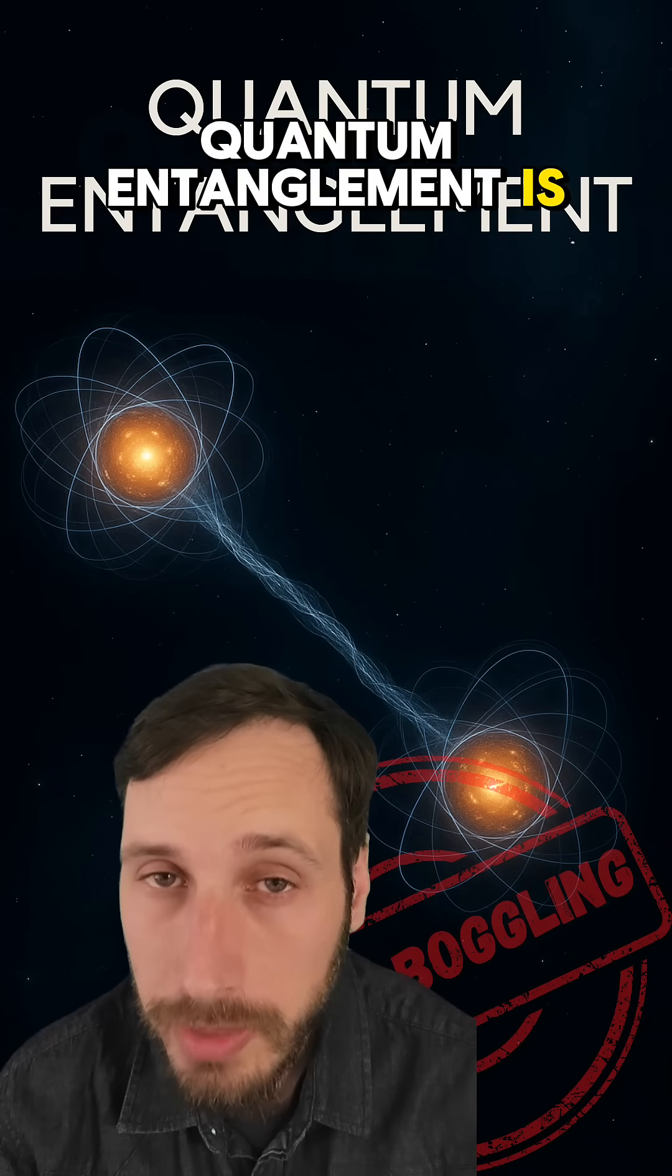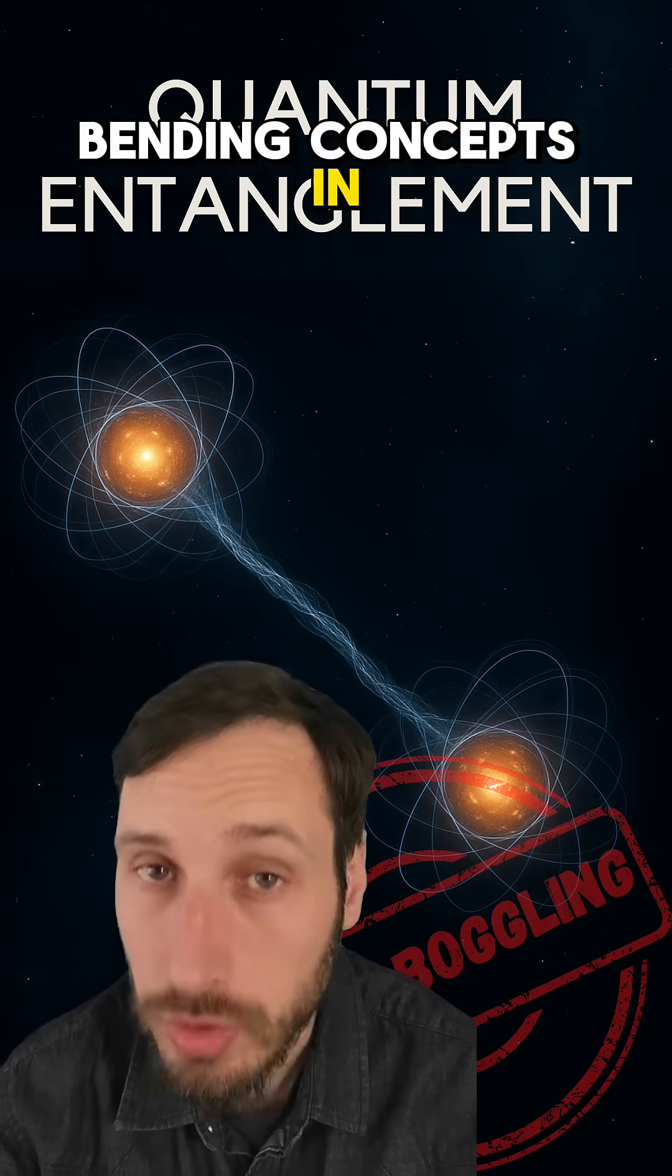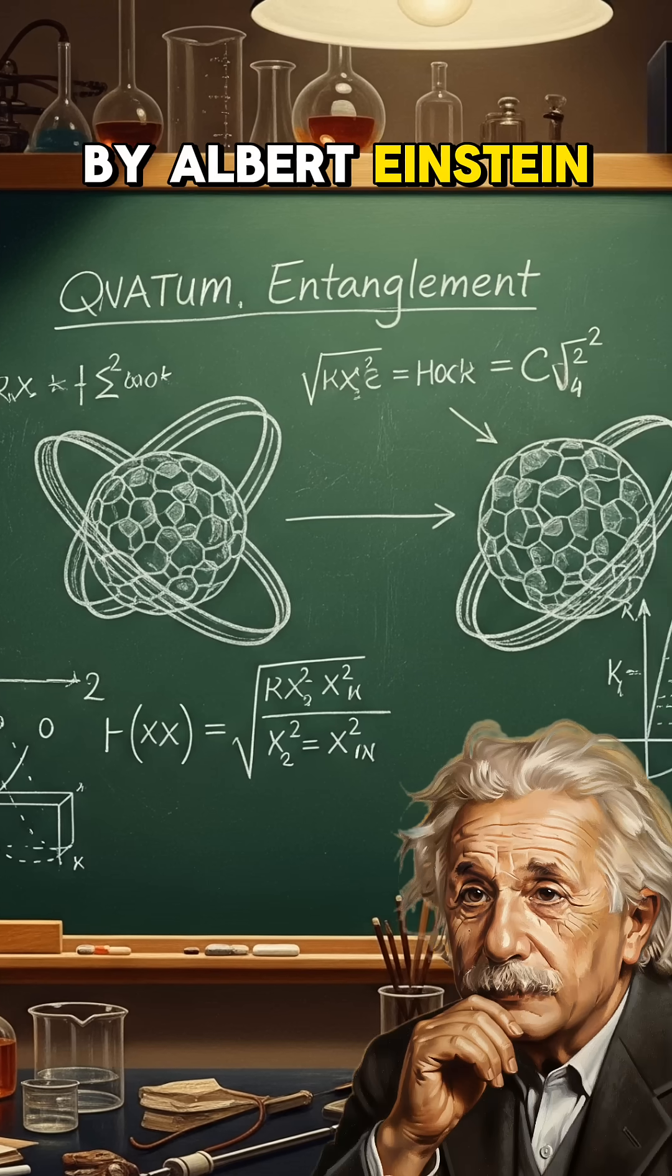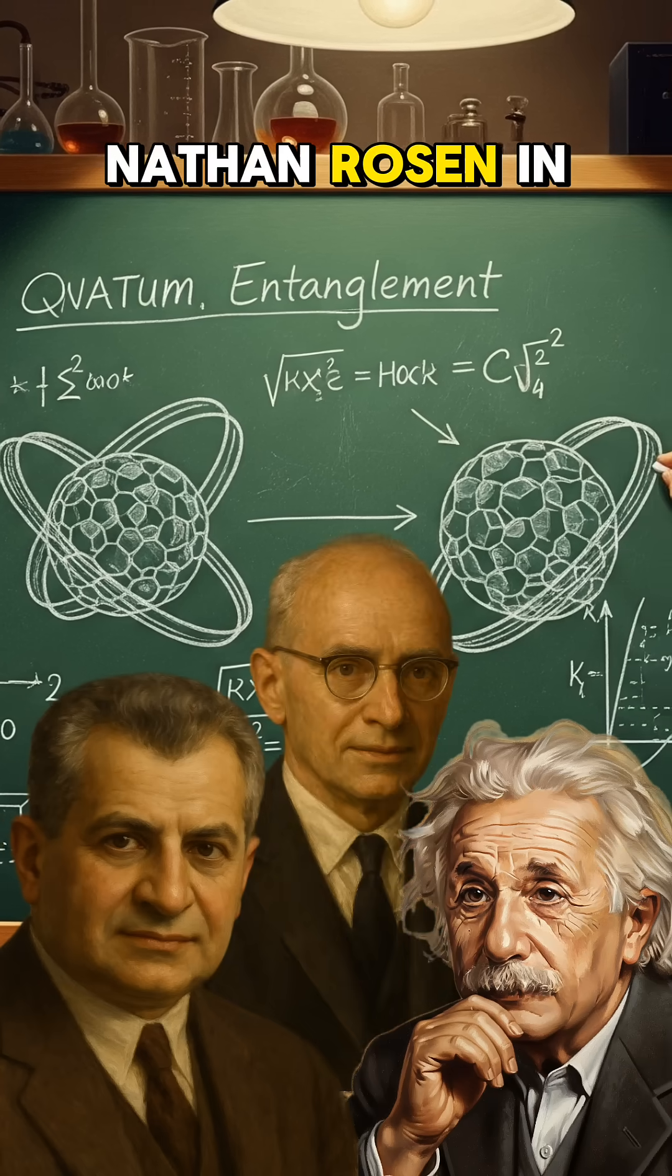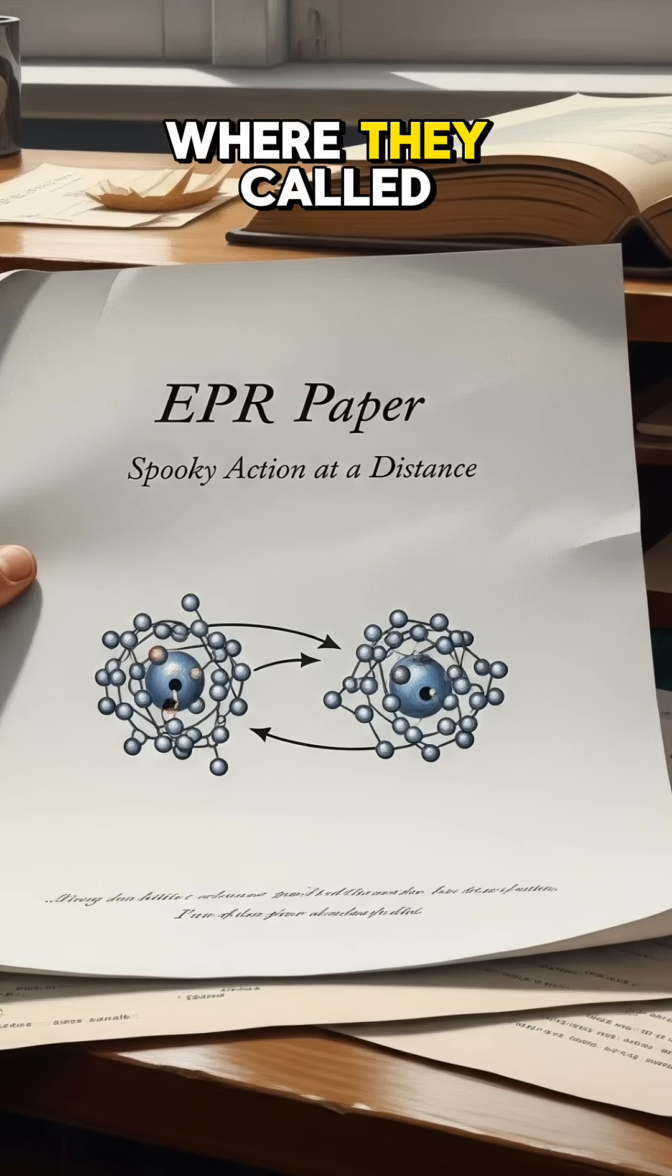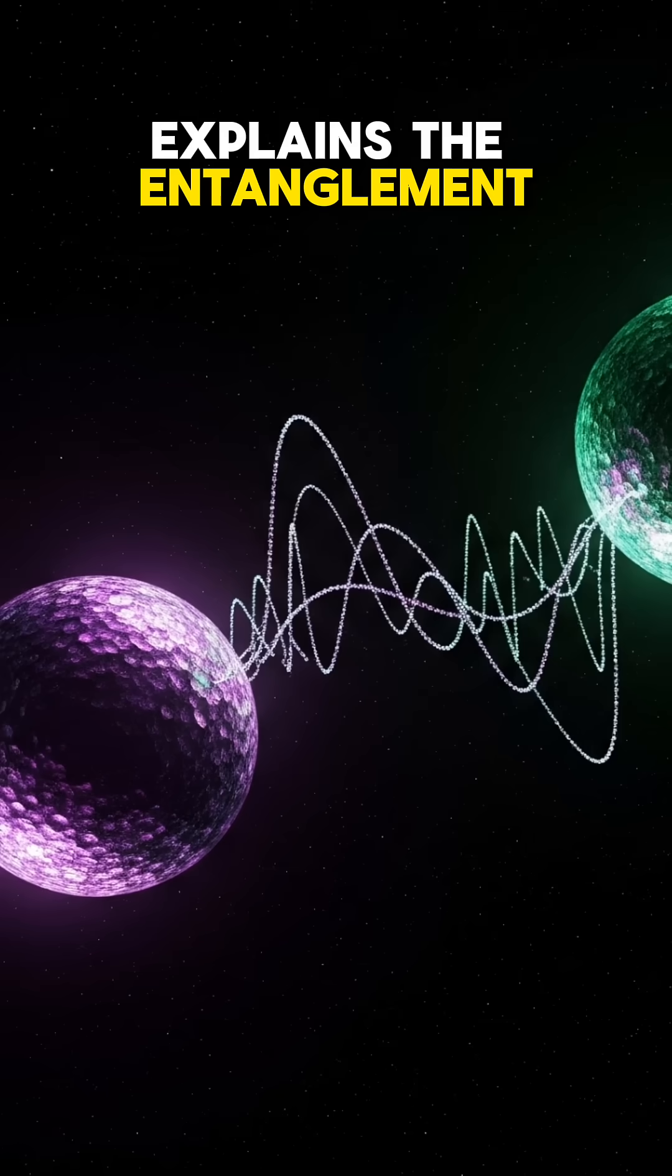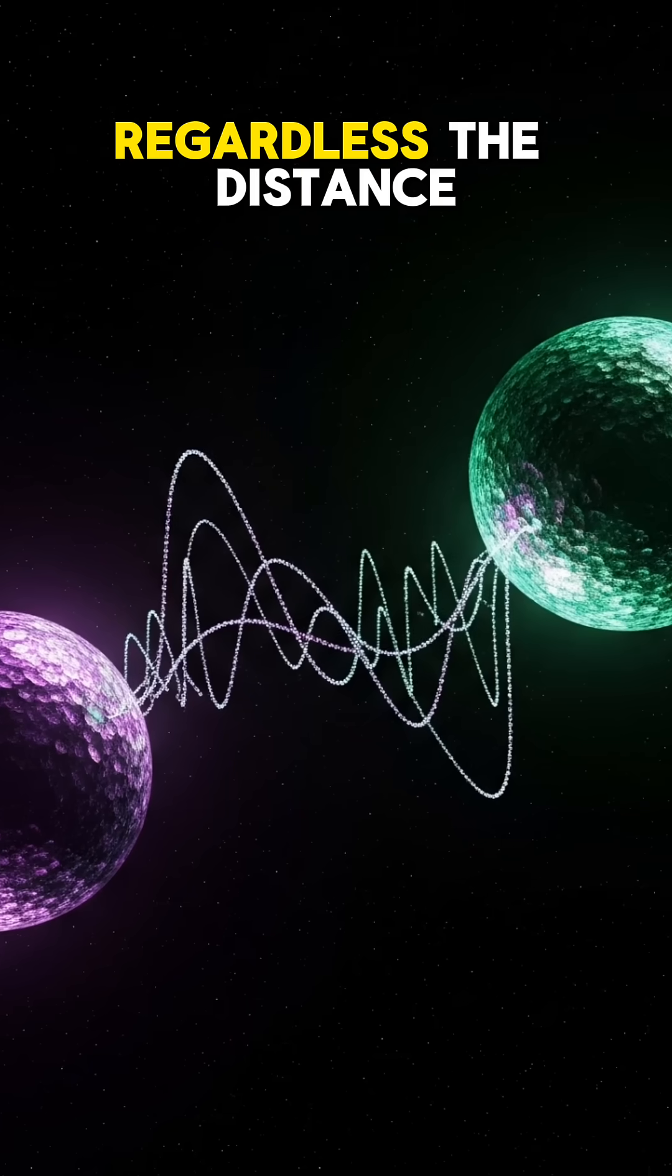The idea of quantum entanglement is one of the most mind-bending concepts in all of science. It was first explored in 1935 by Albert Einstein, Boris Podolsky, and Nathan Rosen in their EPR paper, where they called it spooky action at a distance. Essentially, it explains the entanglement between two particles regardless of the distance.